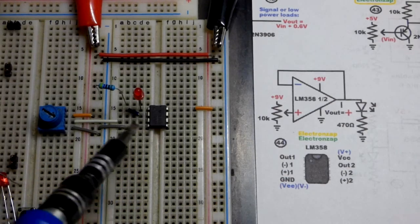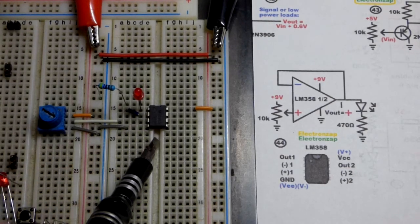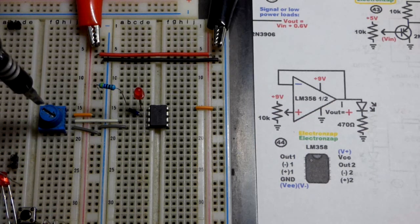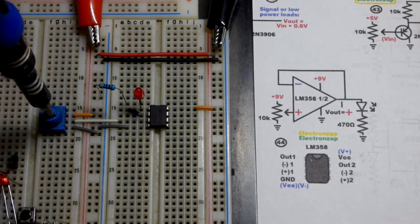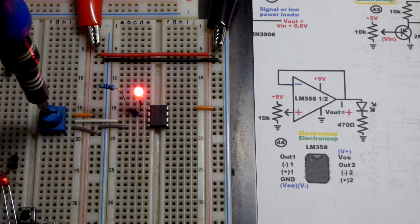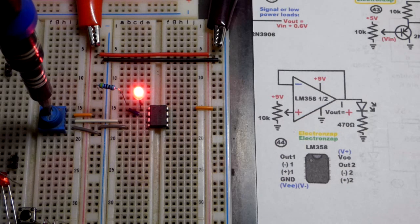In this video we have an op-amp wired as a voltage follower. We've been making circuits recently with bipolar junction transistors that were a form of voltage followers, though not as good as the op-amp at these lower currents.